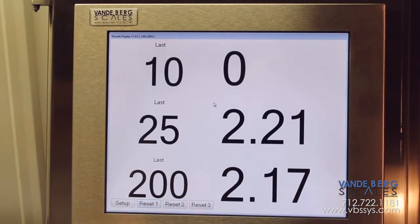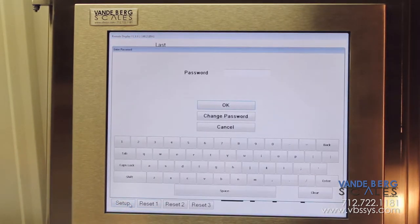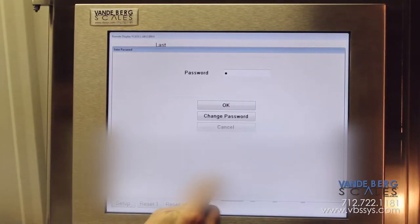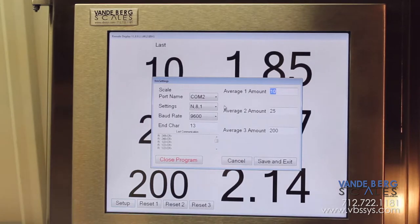Changing the number of averaged weights to be displayed on each line is accomplished through the setup screen. Let's say you want to see different running averages. You simply select the password protected setup screen, change the numbers on one, two or three of the lines and confirm.